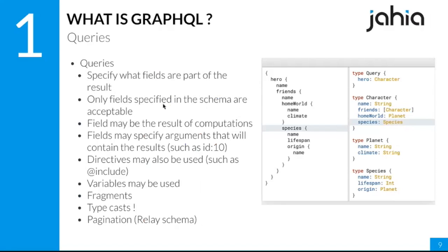Queries specify which fields are part of the results. If you don't specify a field, it won't appear in the result — which is the opposite of REST, where you often don't know which fields will be returned. You can only specify fields that are in the schema — if a field isn't in the schema you cannot request it and the query will fail.